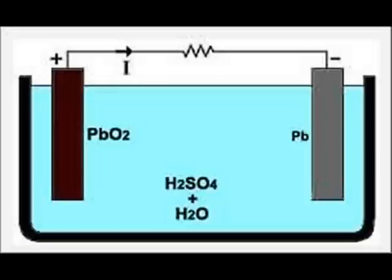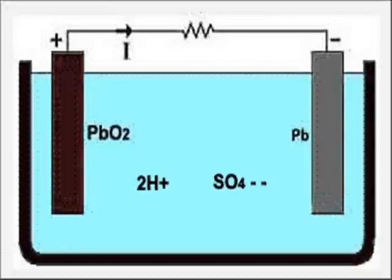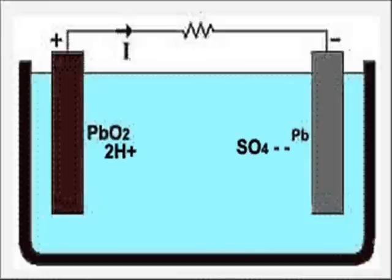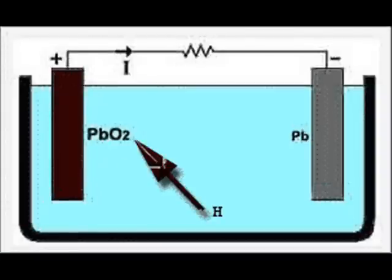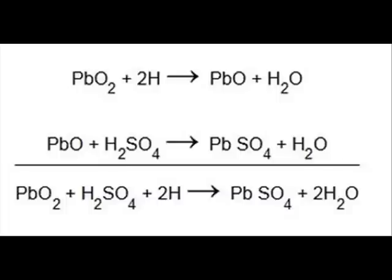In diluted sulphuric acid, the molecules of acid split into positive hydrogen ions and negative sulphate ions. The hydrogen ions when they reach the lead peroxide plate, receive electrons from it and become hydrogen atoms, which again attack lead peroxide and form lead oxide and water.